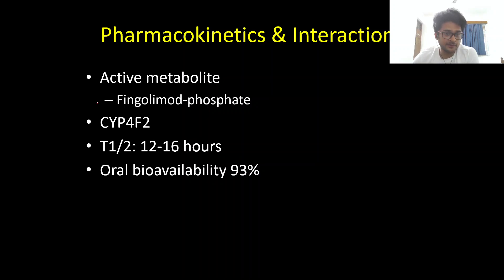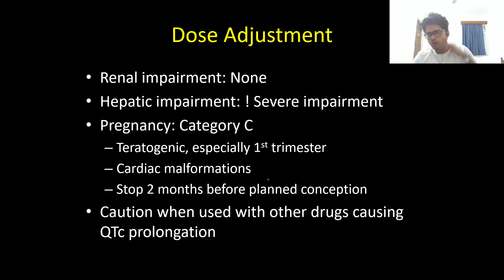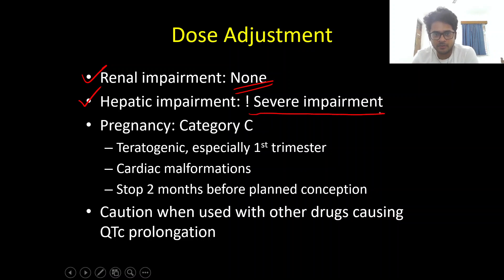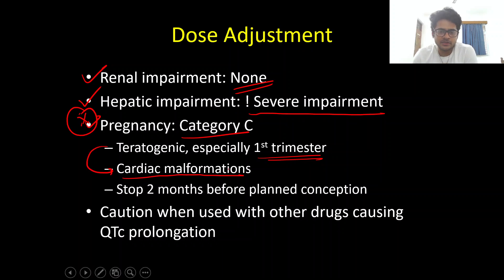Coming to pharmacokinetics: Fingolimod is a prodrug, and its active metabolite is Fingolimod phosphate. It is metabolized by cytochrome P4F2 and has a long half-life of 12 to 16 hours, which is why it has a once-daily dosing schedule. Oral bioavailability is good at 93%. Regarding dose adjustment: no dose adjustment is needed even for severe renal impairment, but caution is required for severe hepatic impairment. Fingolimod is teratogenic — it is Category C in pregnancy, and is associated with cardiac malformations particularly in the first trimester.